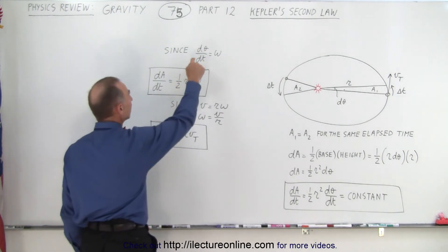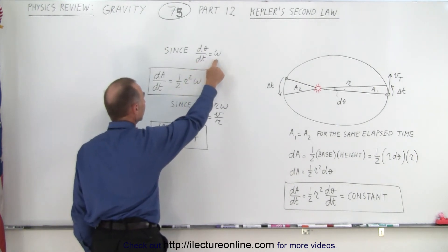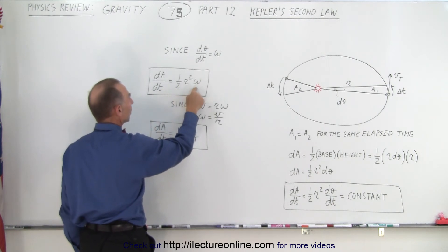Since we can express dθ dt as its angular velocity, it can also be written as dA dt is equal to one half r squared omega.